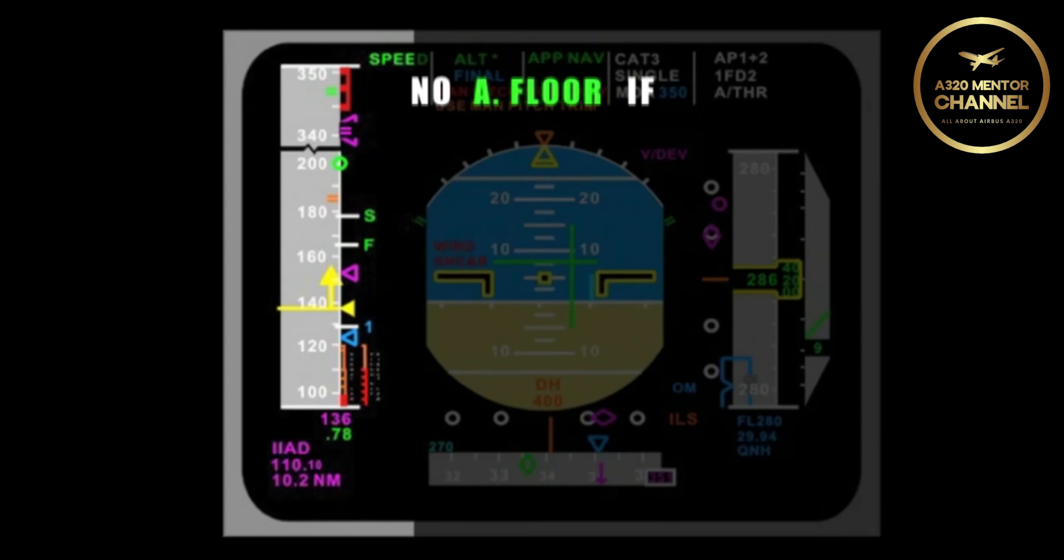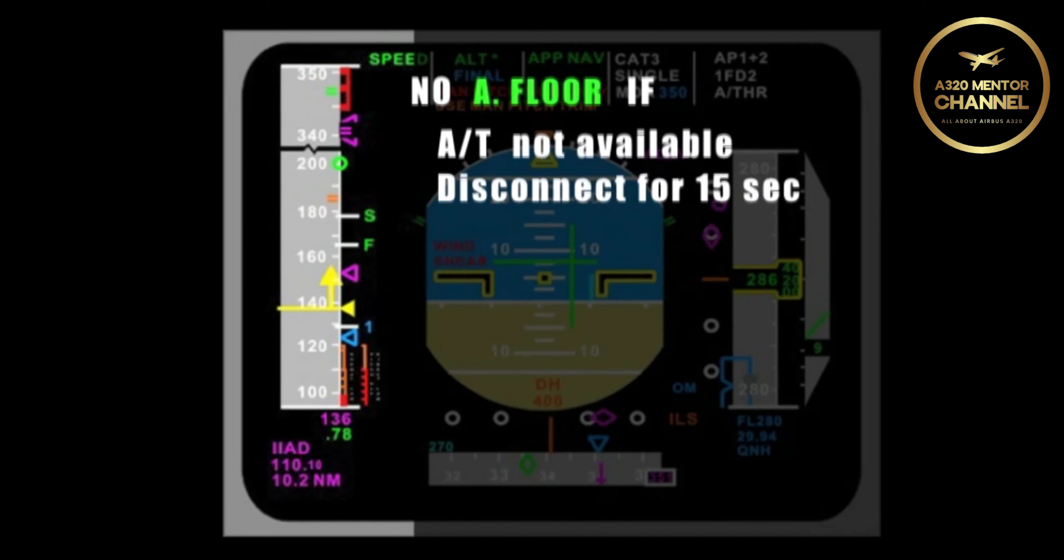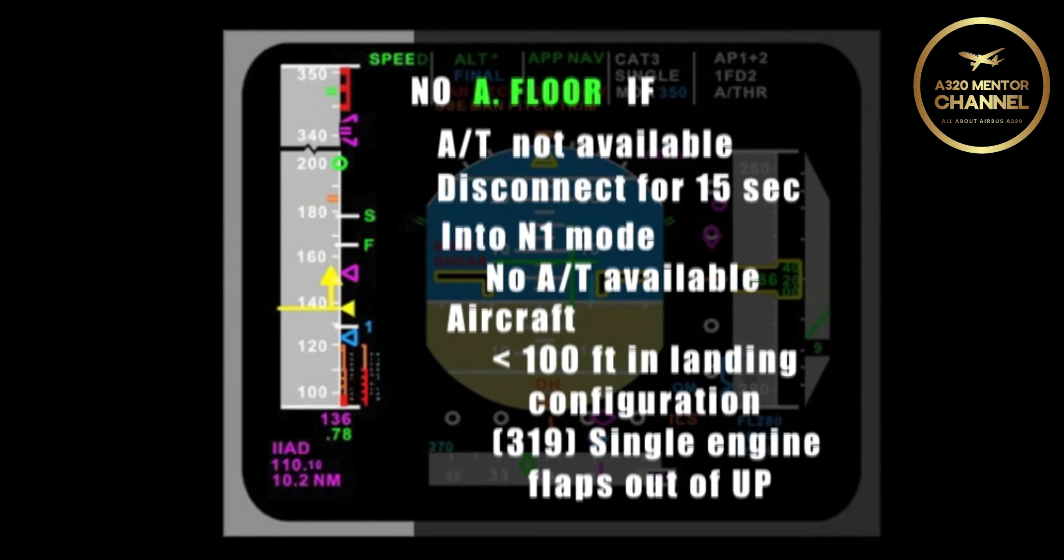Yes. As I already said, if autothrottles are not available, then alpha floor is not available. Also, if you press the instinctive disconnect button for 15 seconds, or if you go into N1 mode, you don't have autothrust. Therefore, you don't have alpha floor. Other times would be any time the aircraft is below 100 feet in landing configuration, or on the 319 if you are single engine and the flaps are out of the up position.